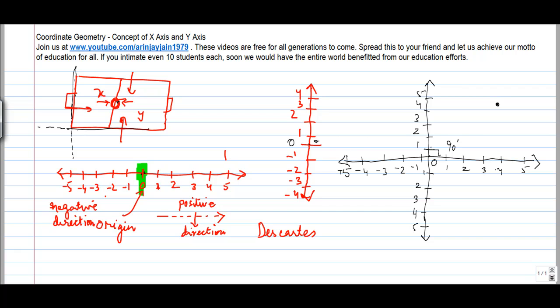Now what he said was that this axis or this line which is horizontal is the x-axis which is referred to as x dash x where x is towards the positive side and x dash is towards the negative side. And the perpendicular line is called the y-axis. So again y is on the positive side and y dash is on the negative side.